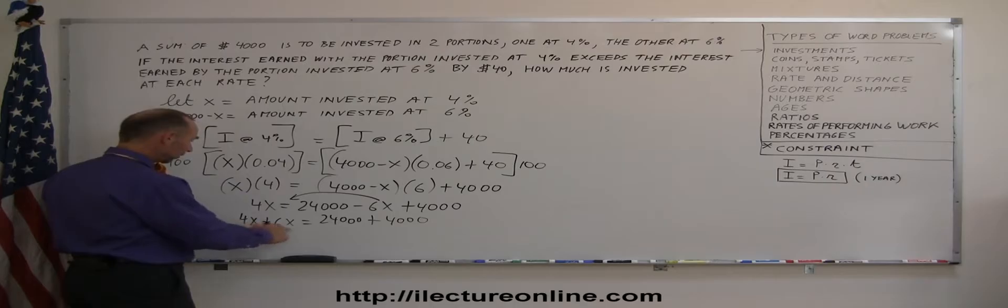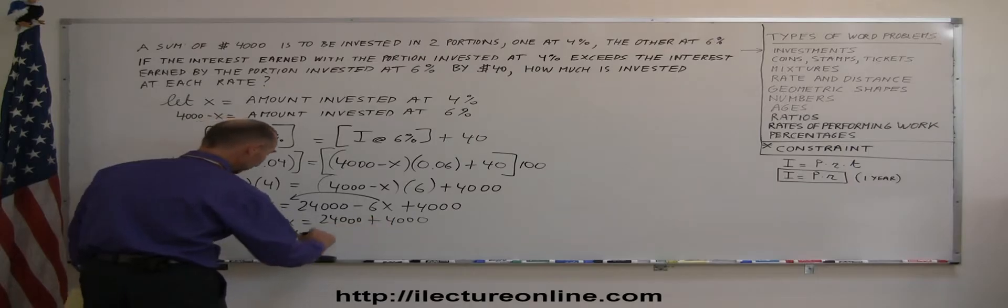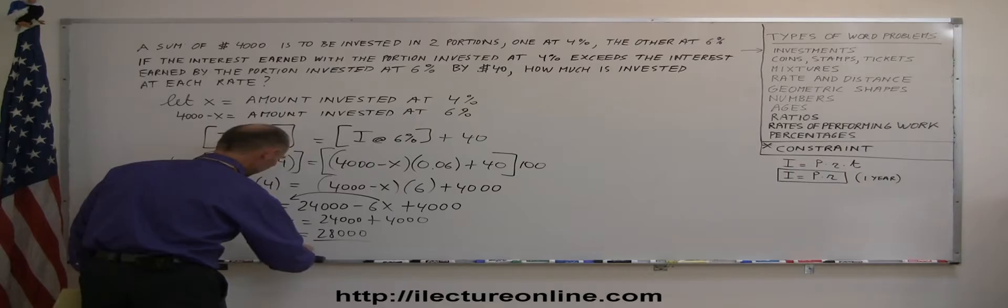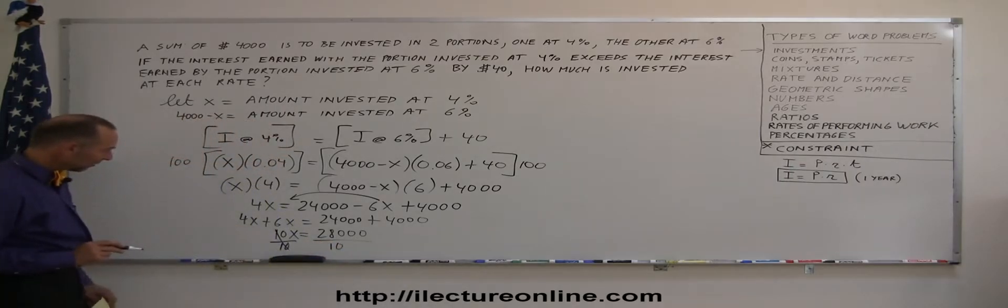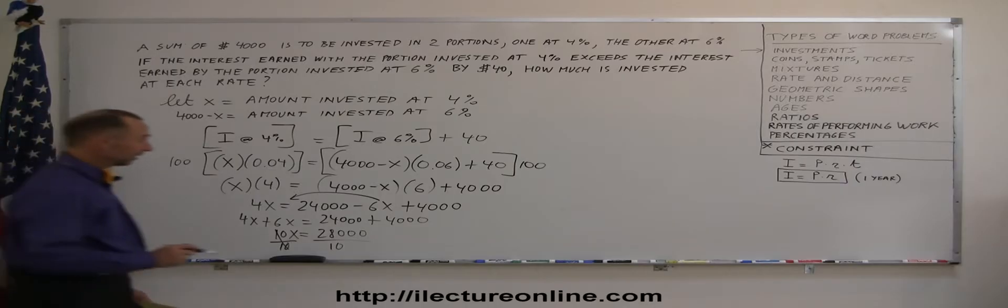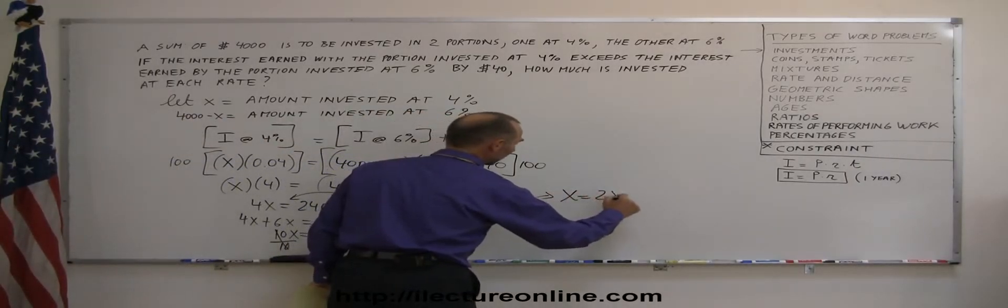So 4x plus 6x, we can combine like terms now, so this is 10x equals 24,000 plus 4,000 is 28,000. And divide both sides by the numerical coefficient in front of the x, that cancels out. And 28,000 divided by 10 is 2,800, so we end up with x equals 2,800.